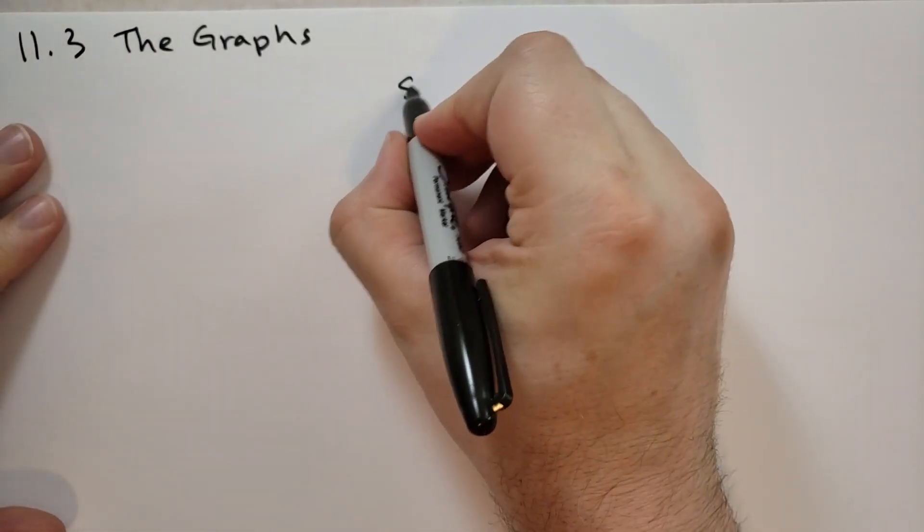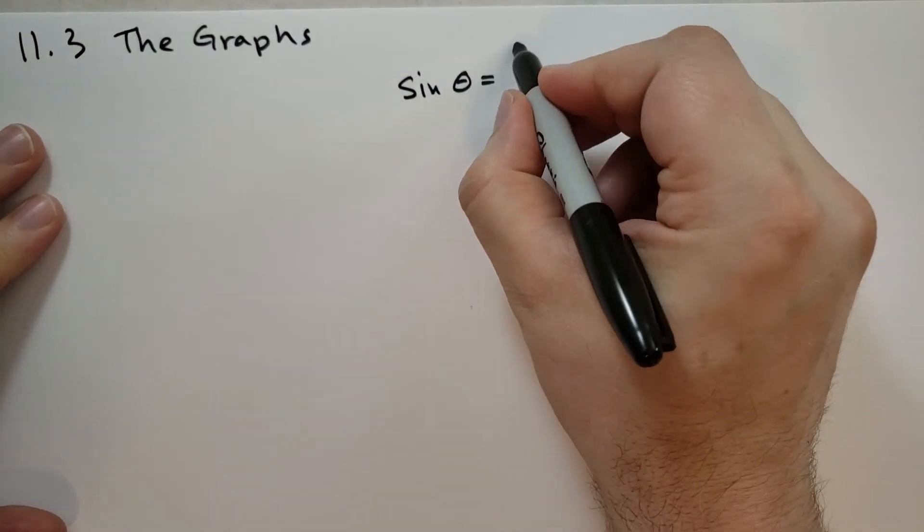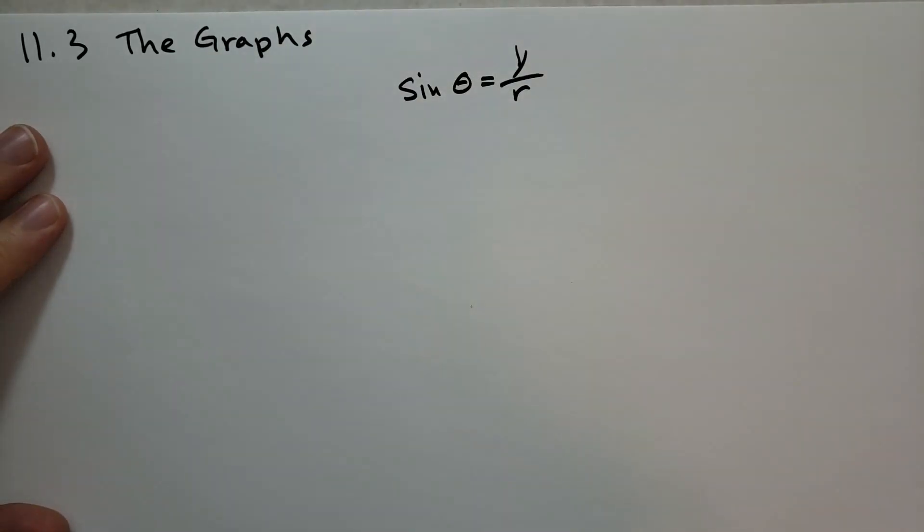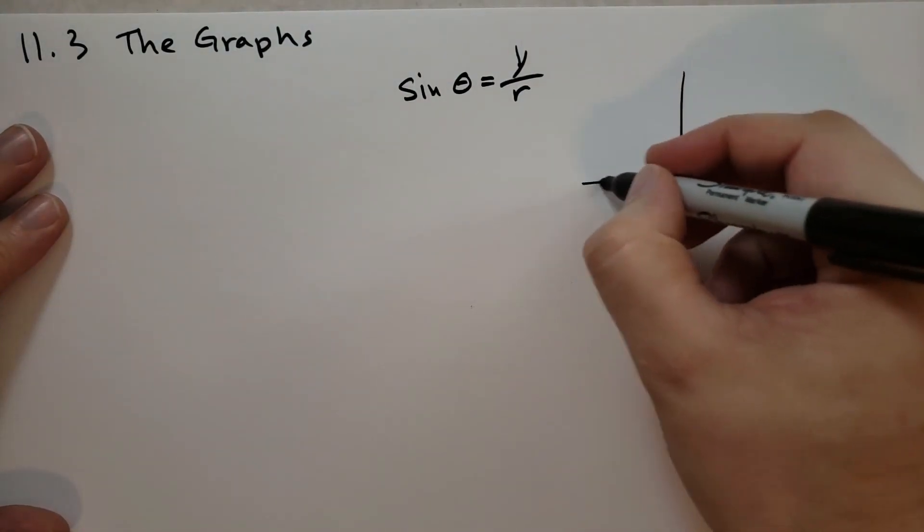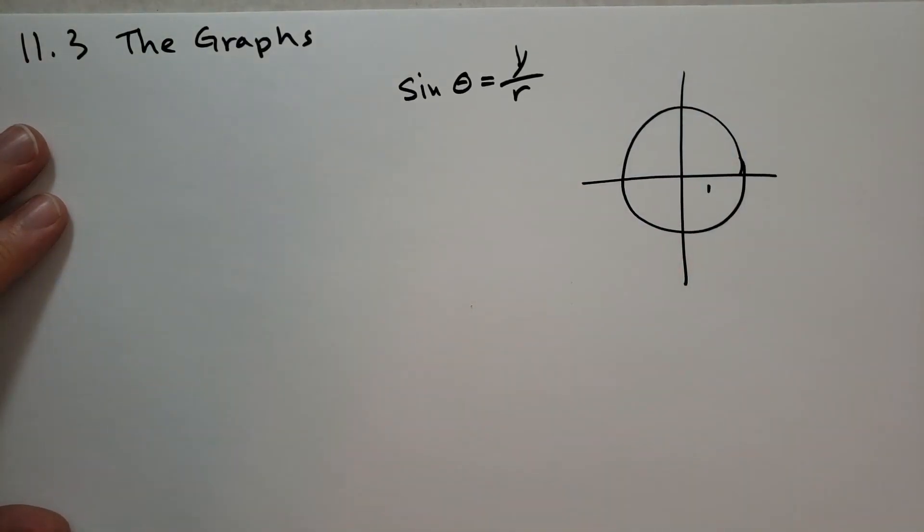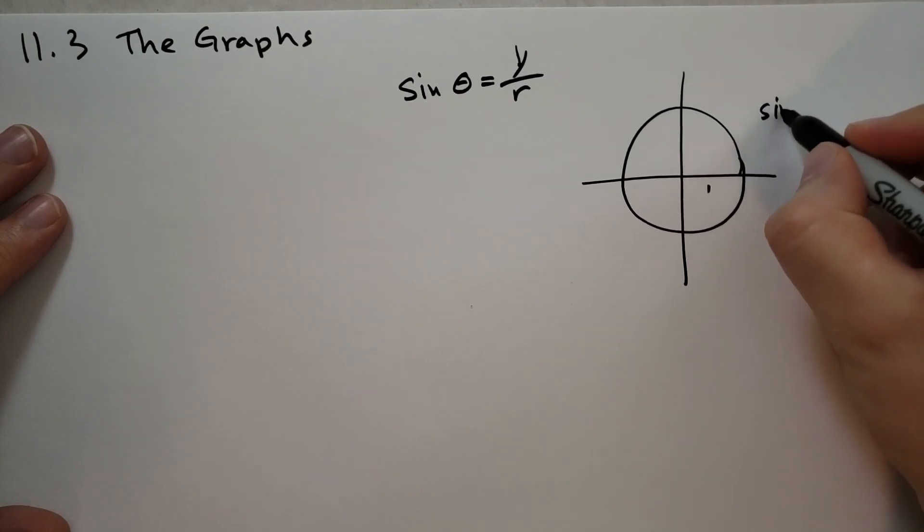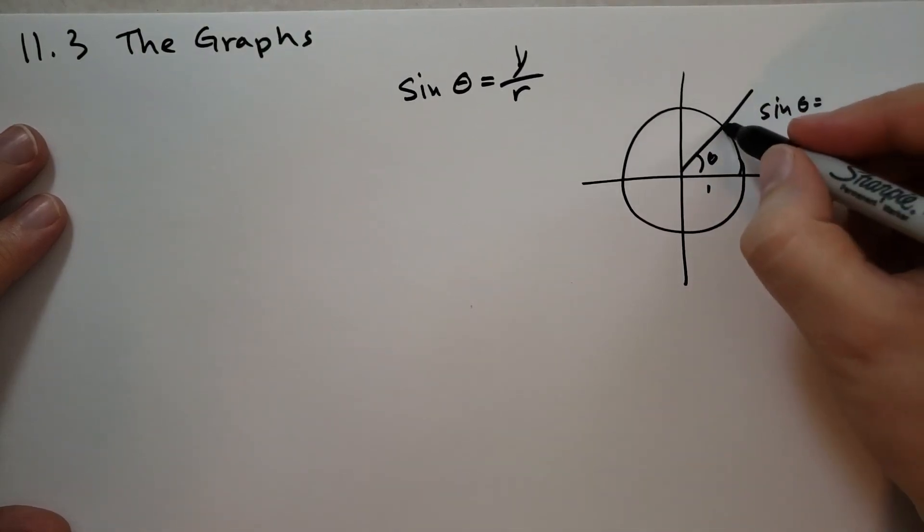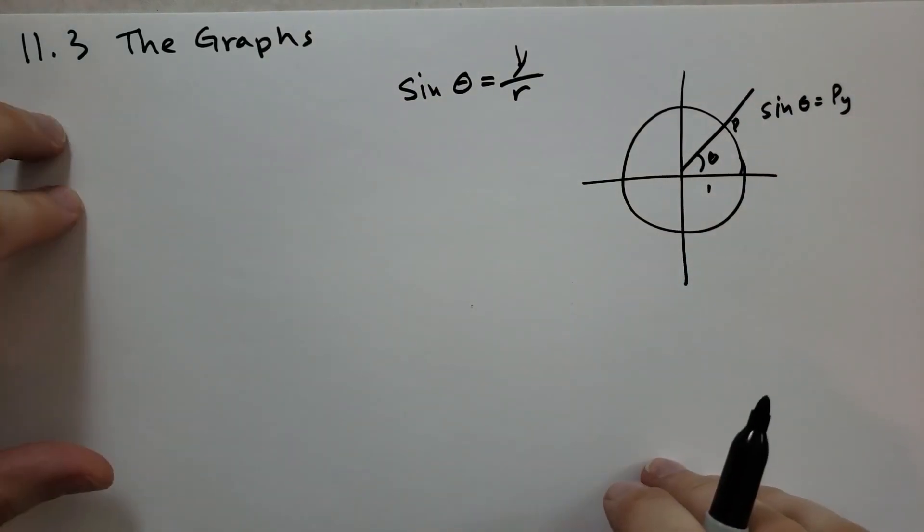This section we look at the graphs of sine. So we're going to draw the graph of sine. Recall that sine of theta is the y coordinate divided by the radius. If we take a unit circle with radius of 1, then sine of theta, where theta is some angle and there's a point P, is just going to be the y coordinate of that point.